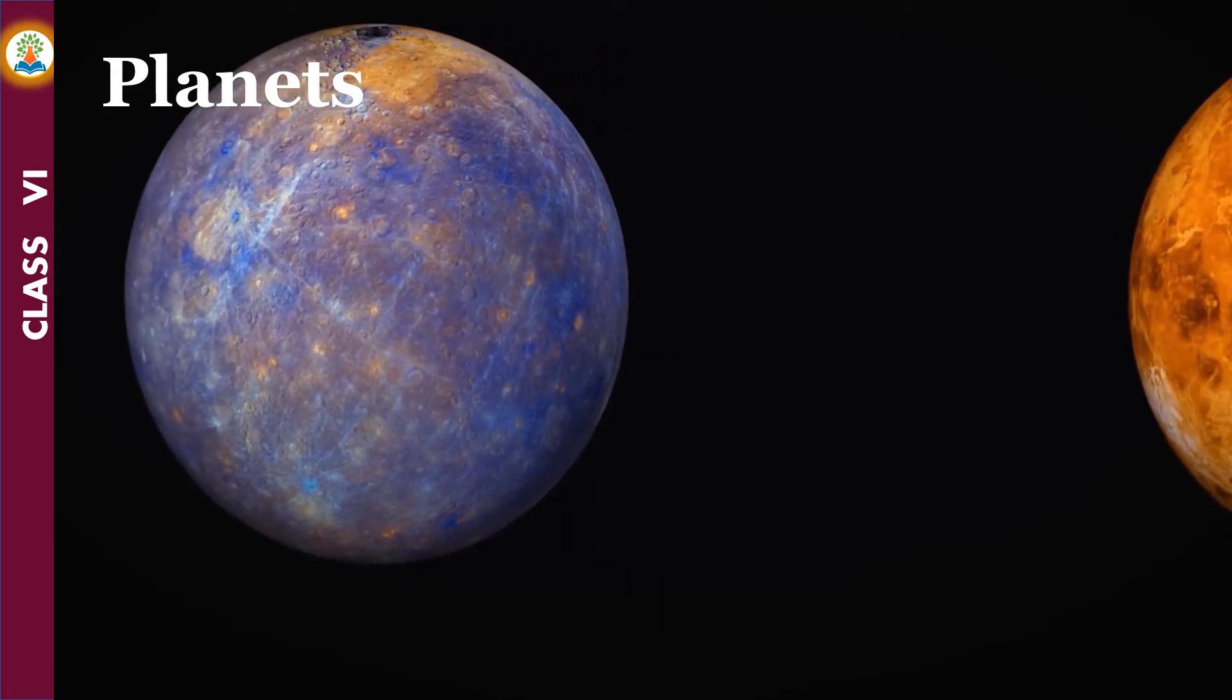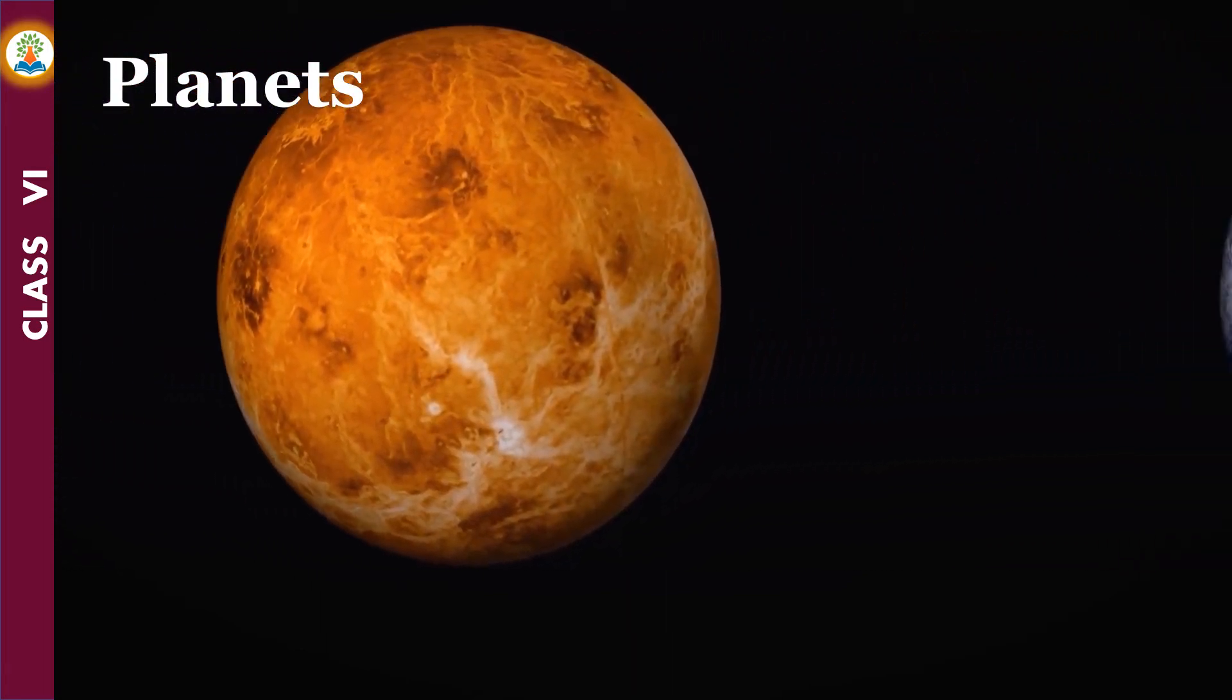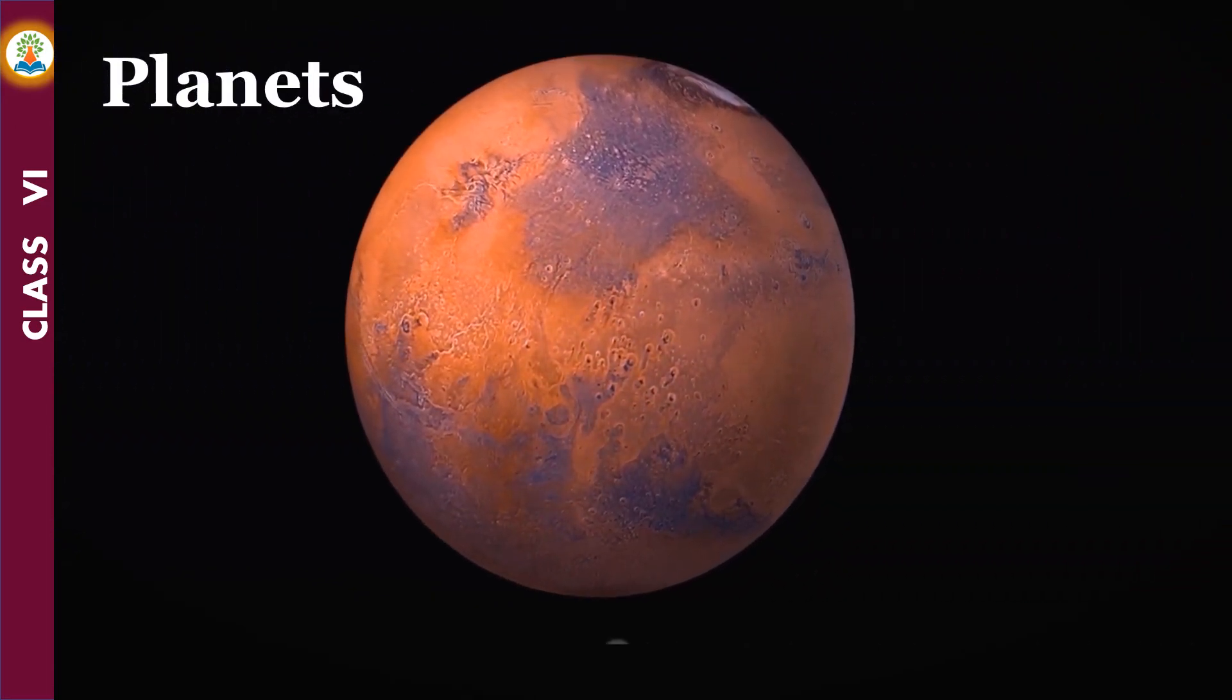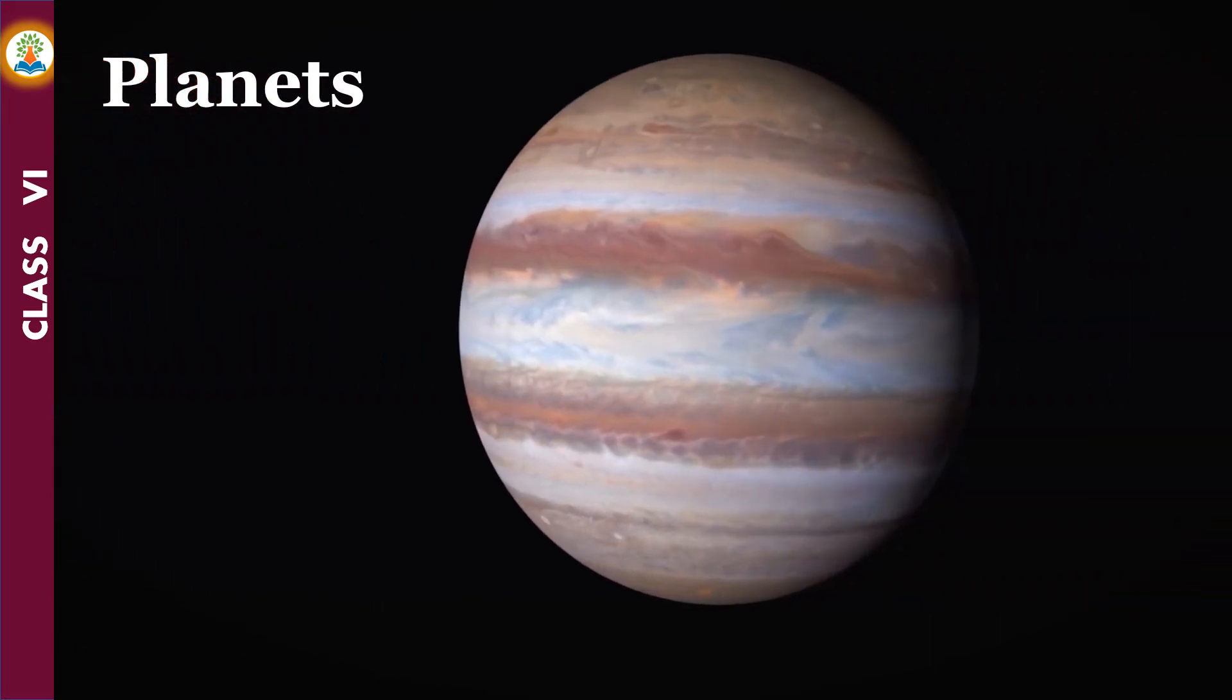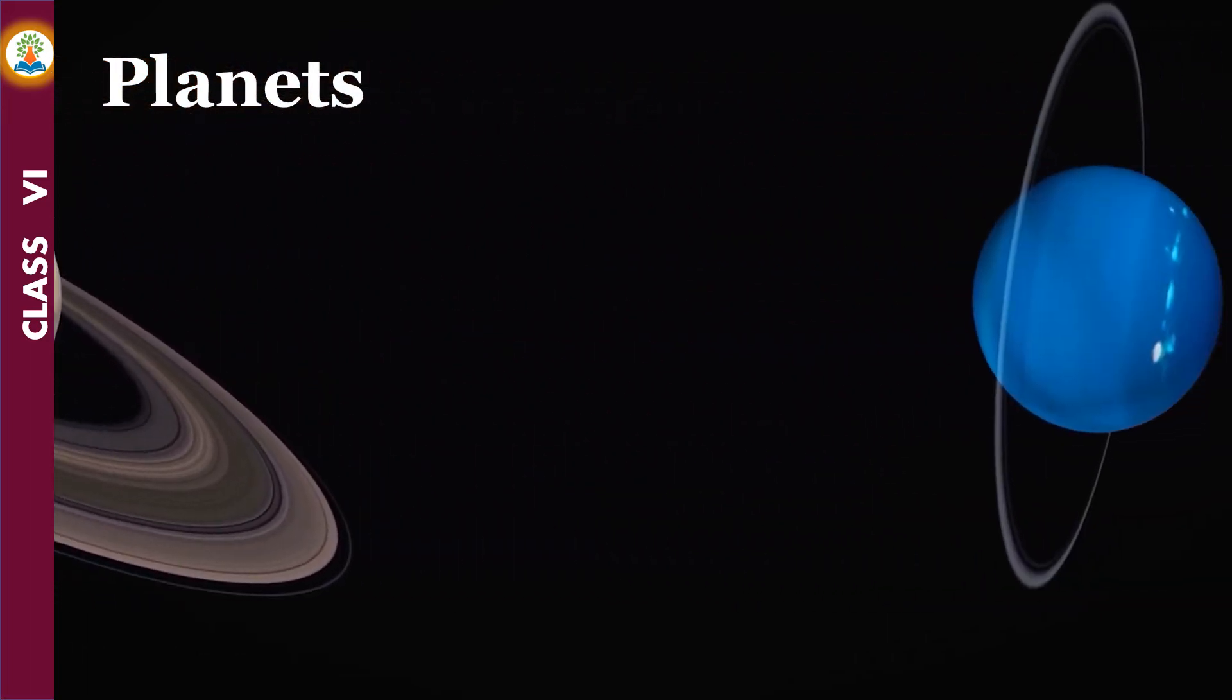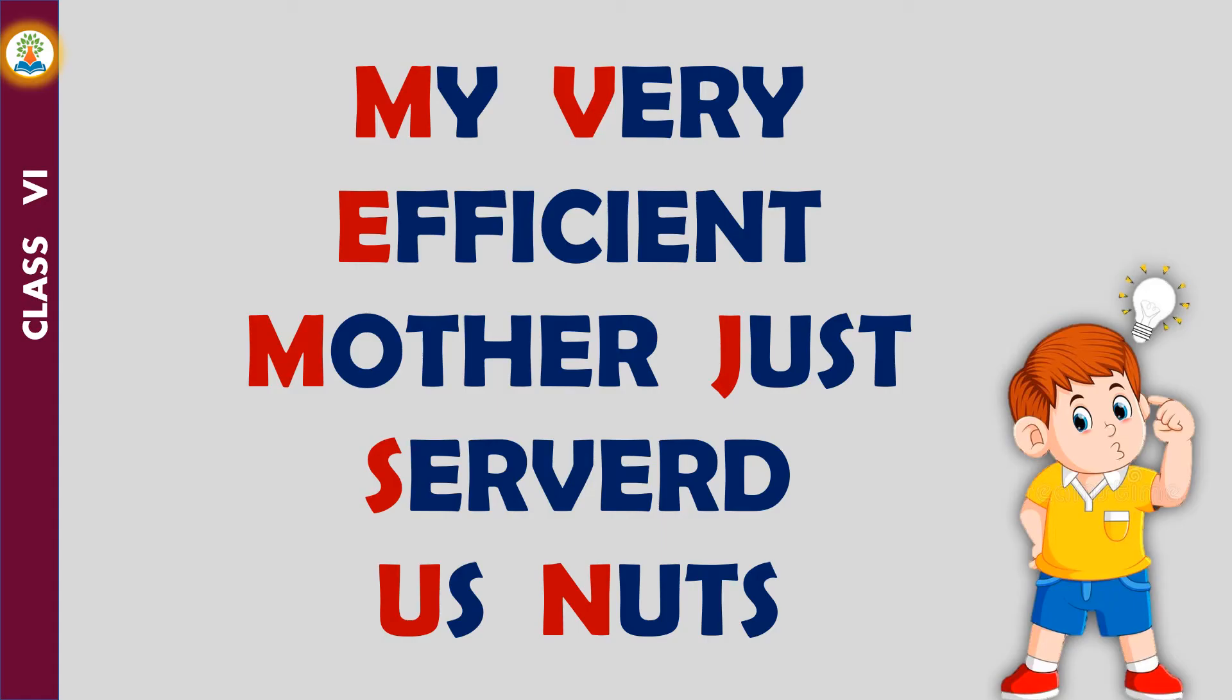There are eight planets in our solar system. In order of their distance from the sun, they are Mercury, Venus, Earth, Mars, Jupiter, Saturn, Uranus, and Neptune. An easy way to memorize the names of the planets in order of their distance from the sun is: My Very Efficient Mother Just Served Us Nuts.